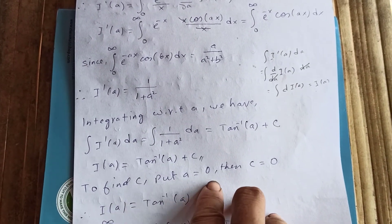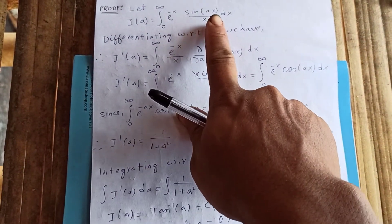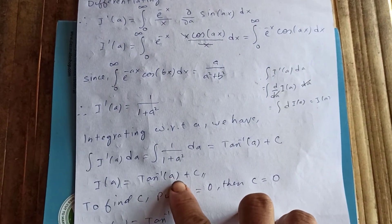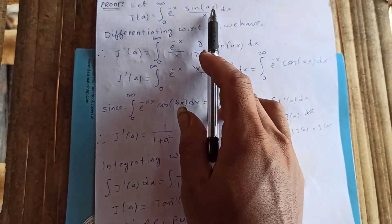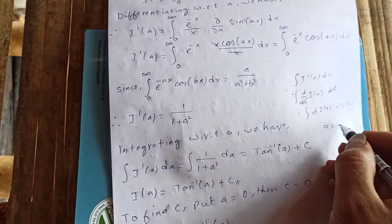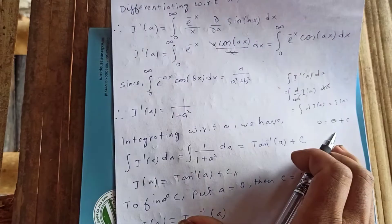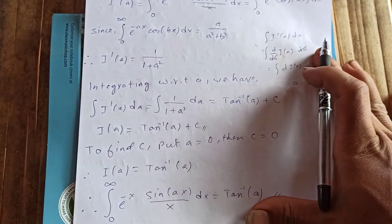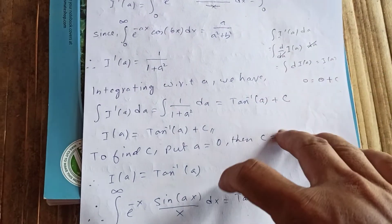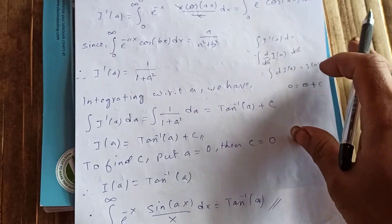To find C, put a equal to 0. Then sin(0) = 0, so I(0) = 0. Also, tan inverse of 0 is 0, so we get 0 = 0 plus C, which gives C equal to 0. Therefore I(a) equals tan inverse of a. So the integral from 0 to infinity of e to the negative x times sine(ax) over x dx equals tan inverse of a.